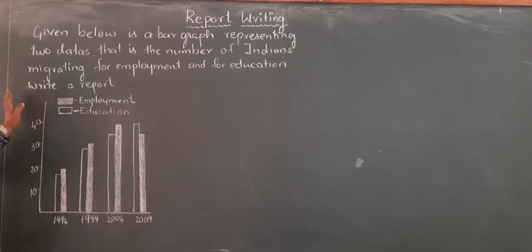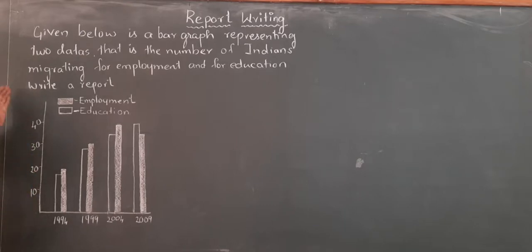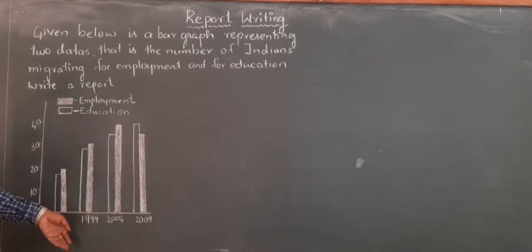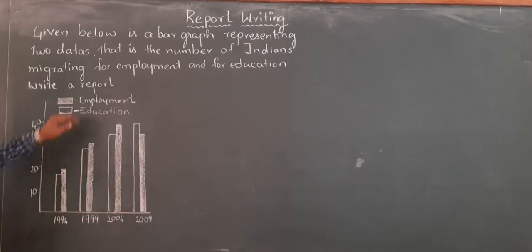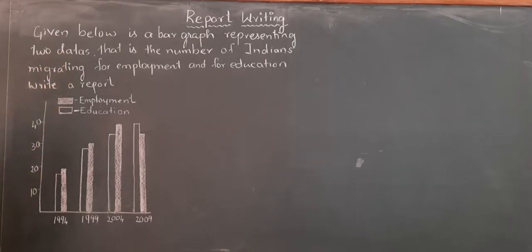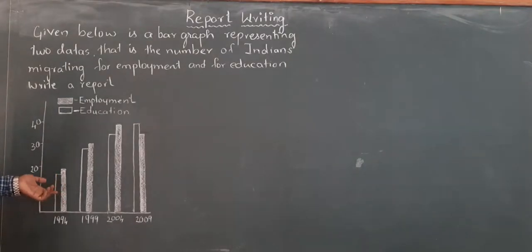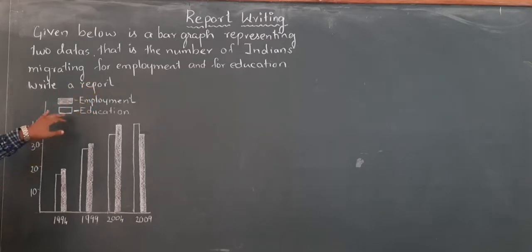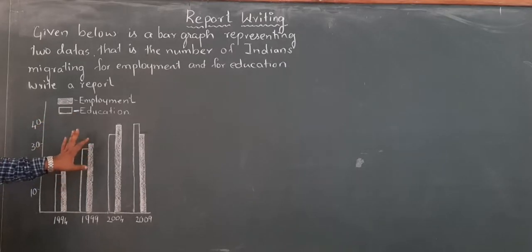Here is the graph. Vertically the numbers have been given. On the horizontal, the years have been given. The bar graph represents two data. One is shaded and another is blank. The one which has been darkened is for employment, and the blank one is for education.